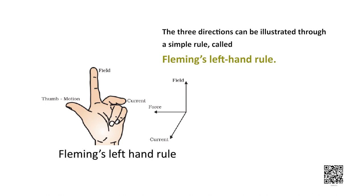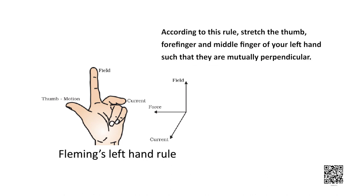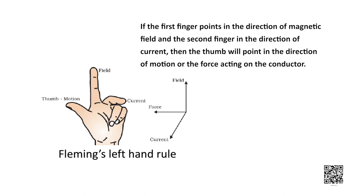In such a condition, we use a simple rule called Fleming's left hand rule to find the direction of force on the conductor. The current and the magnetic field are perpendicular, and the force is perpendicular to both of them. According to this rule, if you stretch your thumb, forefinger, and middle finger of your left hand so they are mutually perpendicular, then the forefinger points in the direction of magnetic field, the middle finger points in the direction of current, and the thumb points in the direction of motion or force on the conductor.